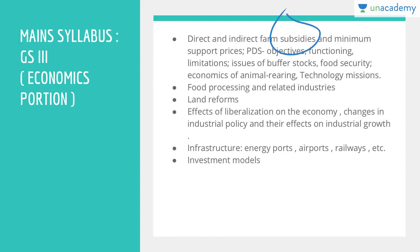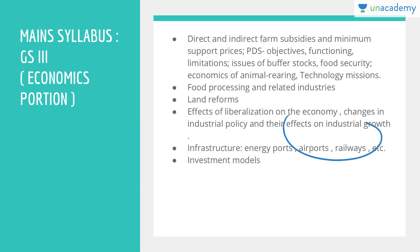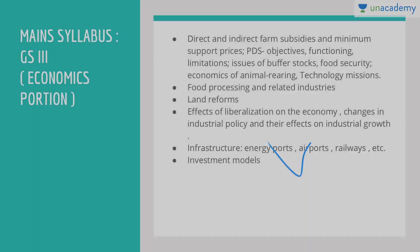Further GS3 topics include direct and indirect farm subsidies, minimum support price, MSP, public distribution system — its objectives, functioning, limitations — issues of buffer stock, food security, economics of animal rearing, technology missions, food processing industries, land reforms, effects of liberalization on the economy, changes in industrial policy, and infrastructure like energy, ports, airports, railways, and investment models.